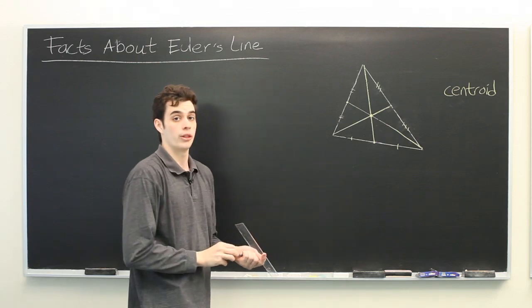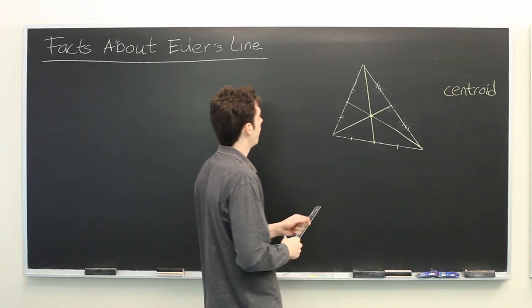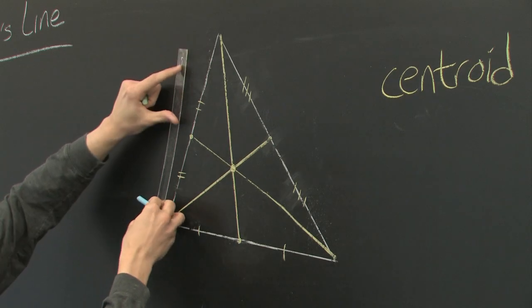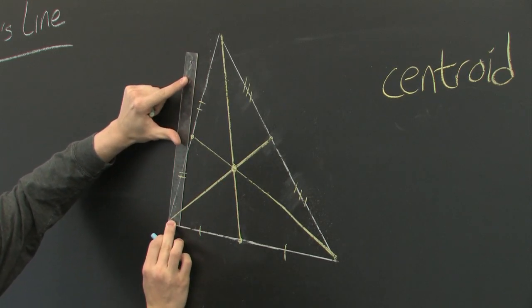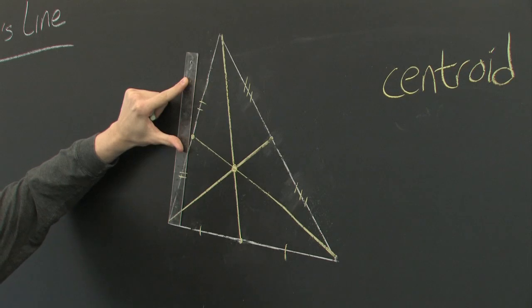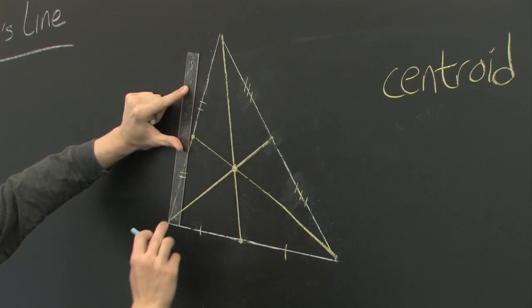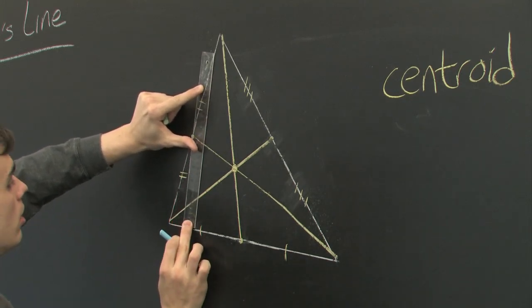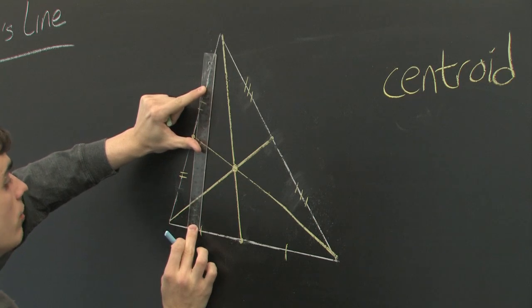Next, we'll look at what's called the orthocenter. From each edge, we're going to construct an altitude, which is a line segment that is perpendicular to the edge, that intersects with the opposite vertex.